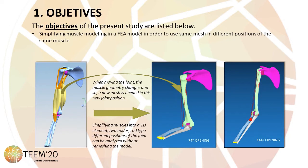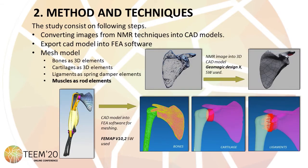In our study, as can be seen in the image at the bottom, the muscles are simplified as 1D elements of growth type, allowing us to have different positions of the joint by reusing the generated mesh, and so analyzing with this unique mesh the joint at any position.